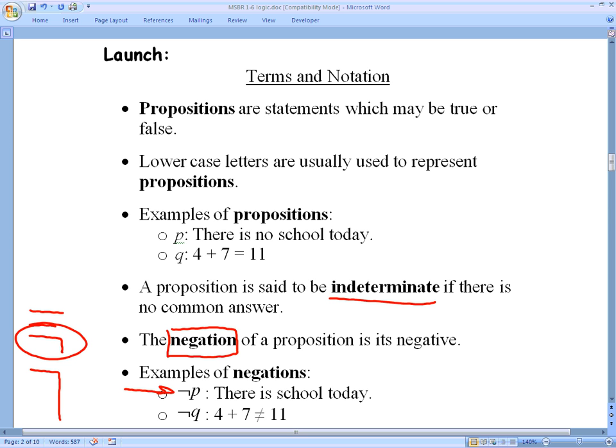And so the negation of P would be there is school today. It's the opposite. It's the complement. And the negation of Q is four plus seven does not equal 11. And in this case, the negation of four plus seven equals 11 is false. This is a false statement because four plus seven does equal 11. The original proposition was a true statement.